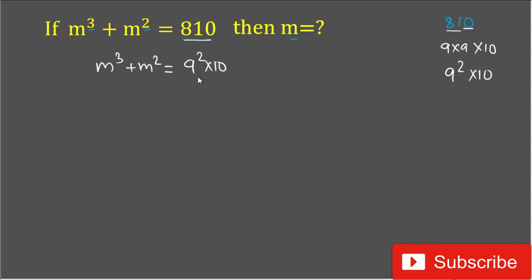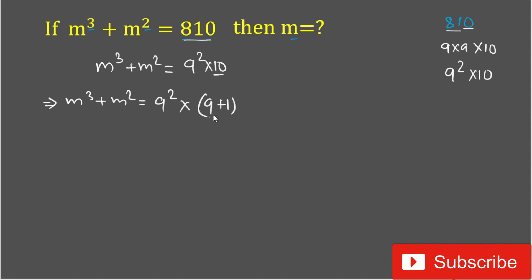On the left-hand side we have m³ + m², and that equals 9² × 10. In the next step, we write m³ + m² = 9² × 10, and we rewrite 10 as (9 + 1), so we have 9² × (9 + 1).